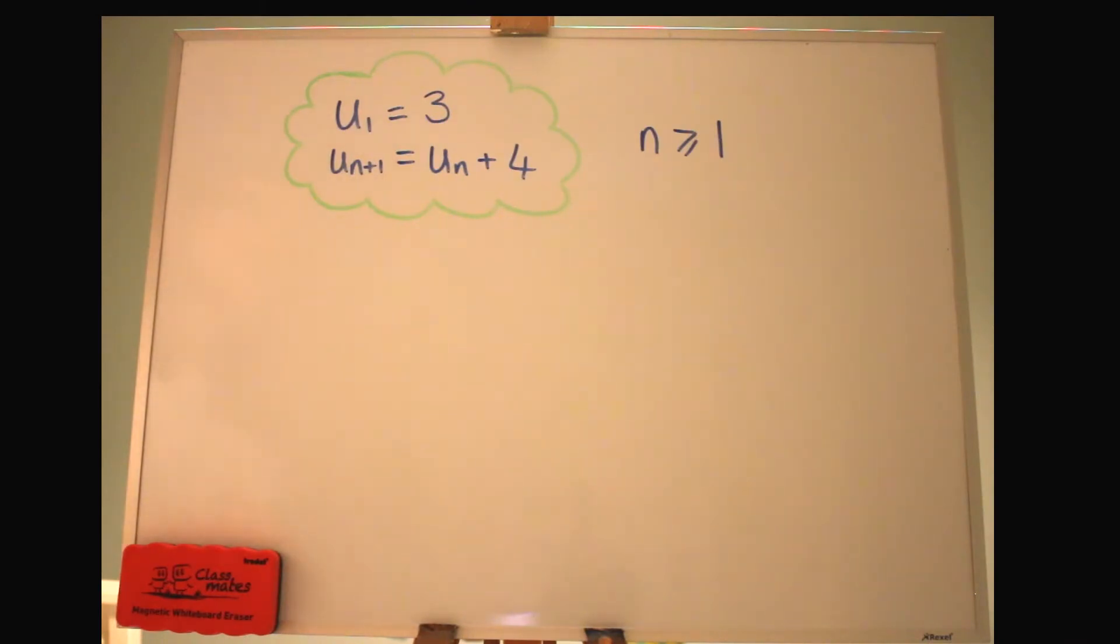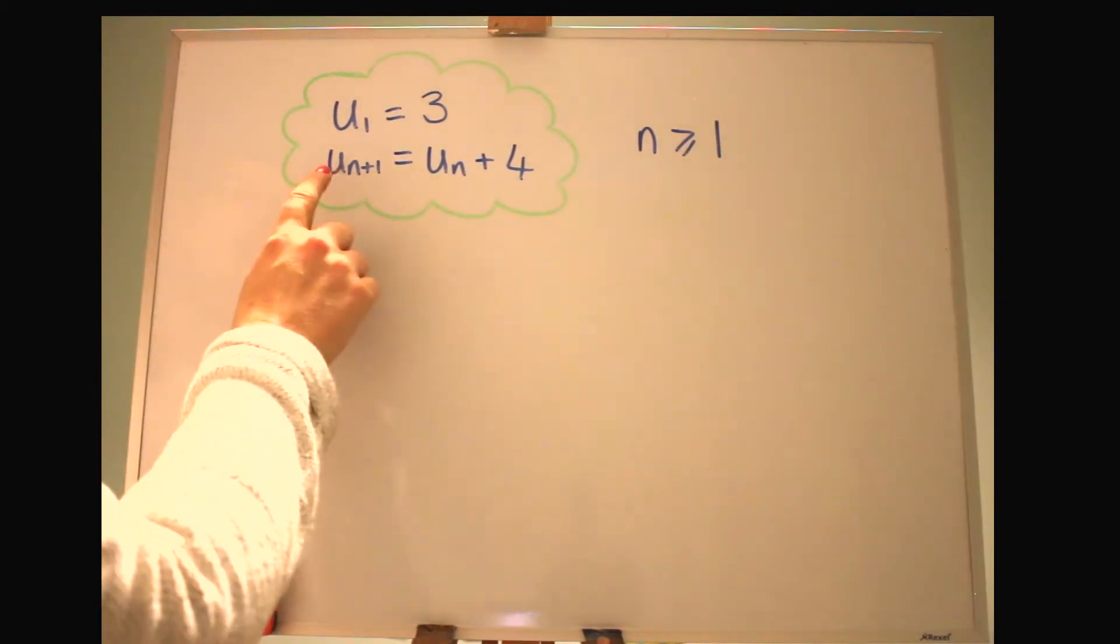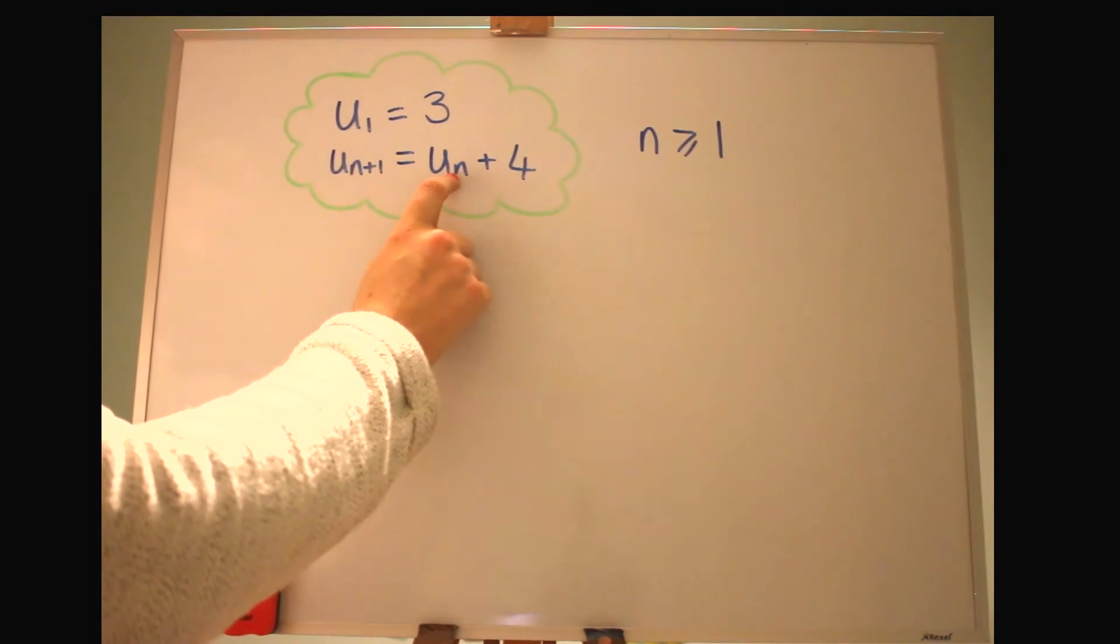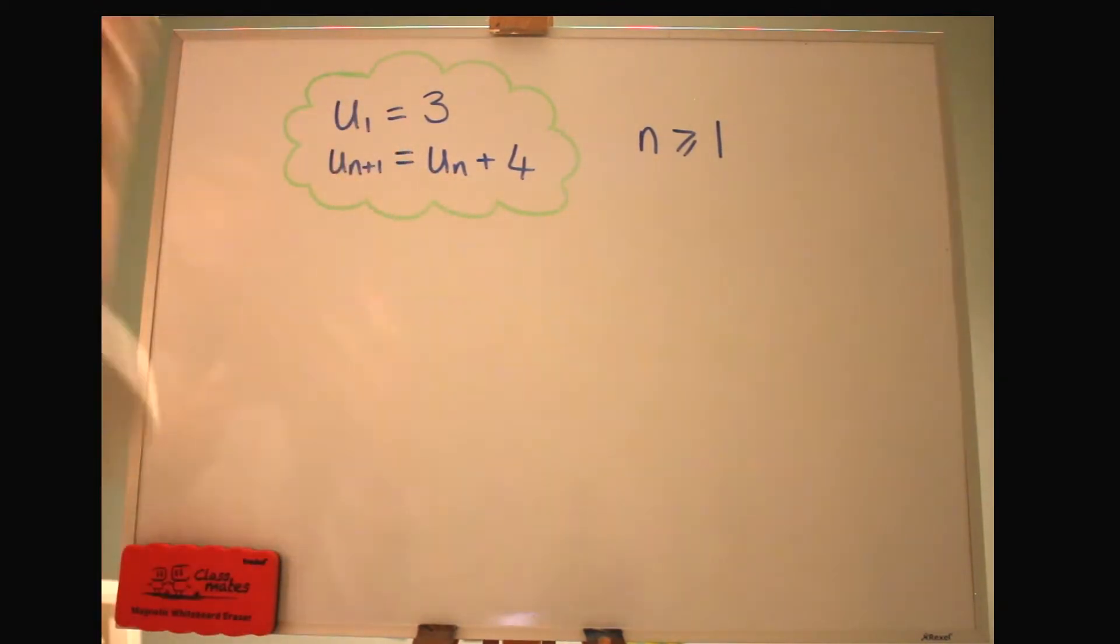Here we have our first recurrence relation. A recurrence relation is just a way of describing a set of numbers and it uses a format like this. First you're given the first term here, that's 3, and then you're given a relationship that tells you how to generate the other numbers in the sequence. Generally we use a letter like u or a or x with little numbers next to it. So 1 stands for the first term, then u2 would be the second term, u3 the third term, and so on. Then we're given u of n plus 1 is u of n, so that's a general formula where n takes on different numbers and we can use that to generate the next one.